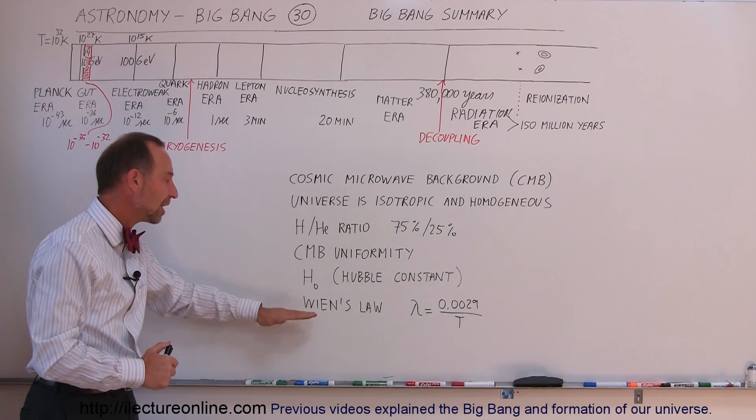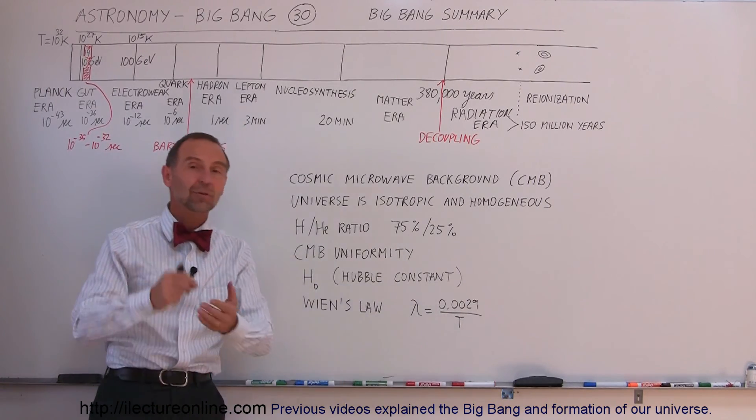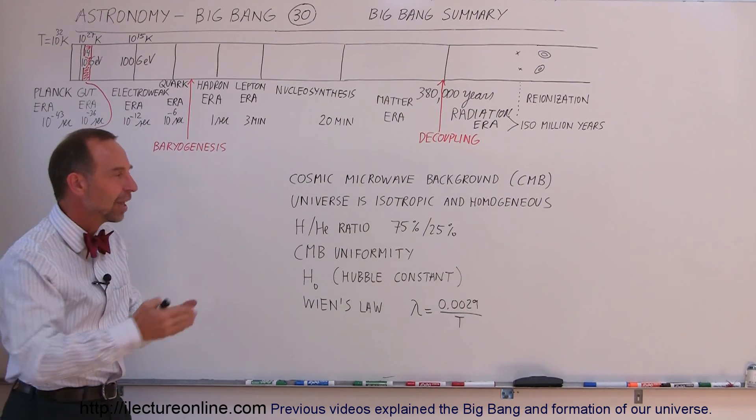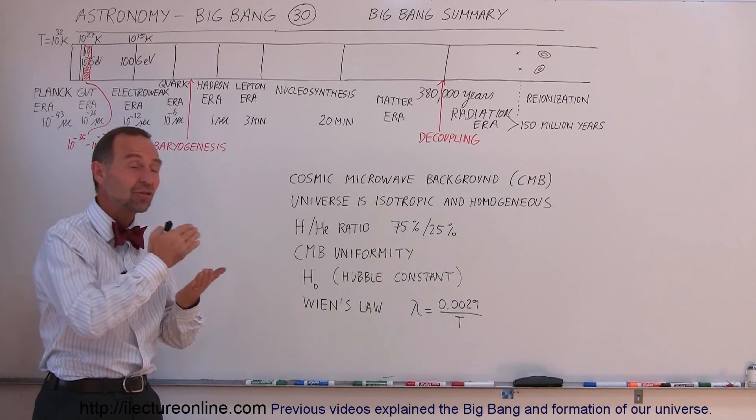And also by understanding Wien's Law, to realize that the radiation and the wavelength of that radiation is simply a result of what the temperature was at those various stages, and we understand what kind of matter could have been produced at what stage of the Big Bang.